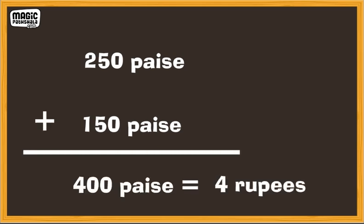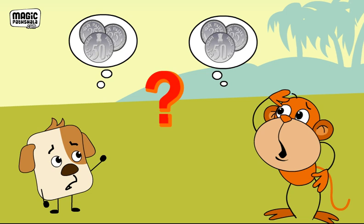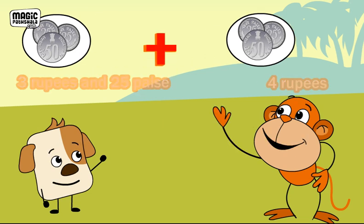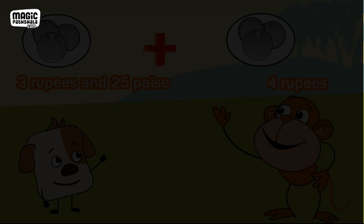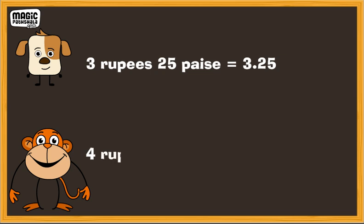How much money do they have altogether? To find the total, we need to add Gul's money and Jojo's money. First, write the amount in figures. Rs. 3 and 25 paise will be 3.25, and Rs. 4 and 0 paise will be 4.00.